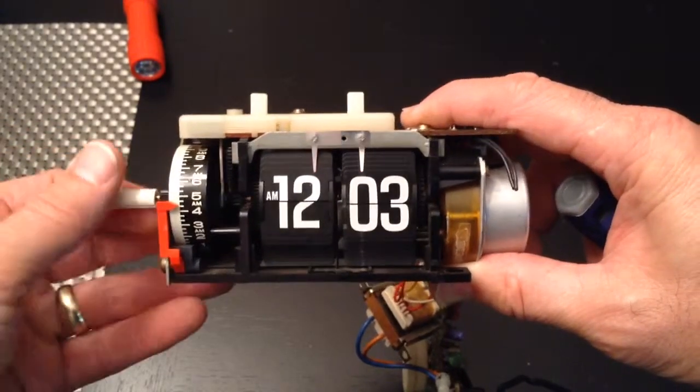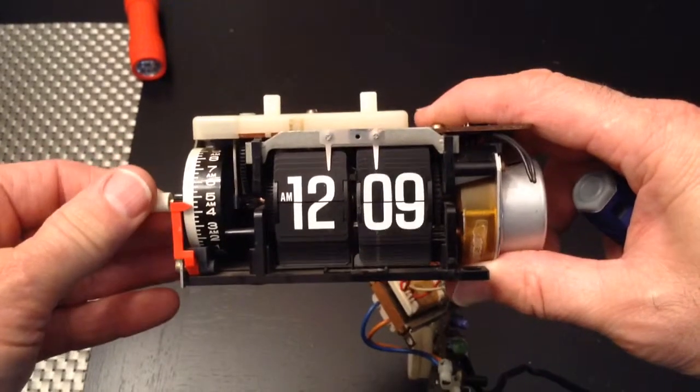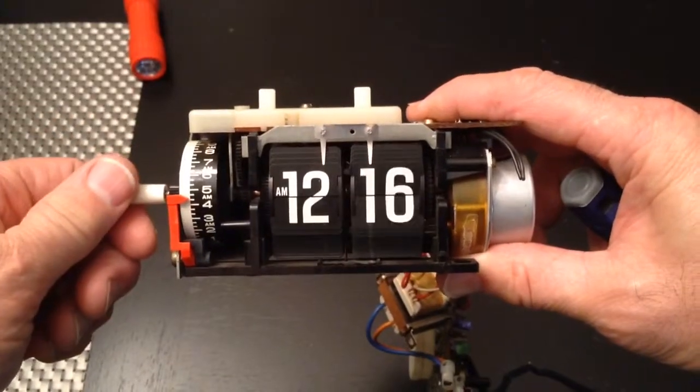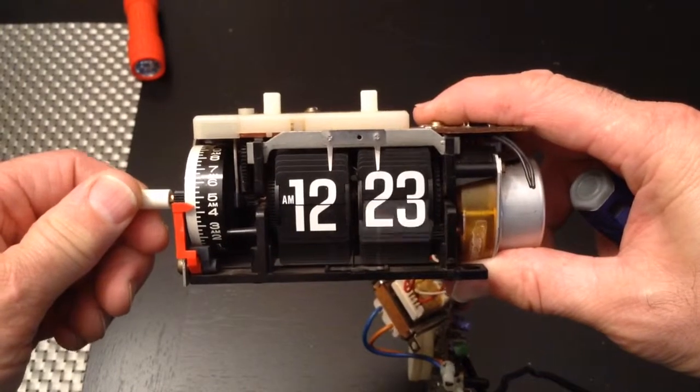So we're going to go to 12 here. Everything is going along just fine here. Both wheels are advancing slowly. You'll get the drop to the next tile.